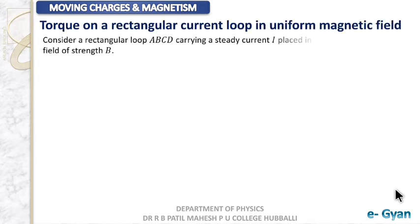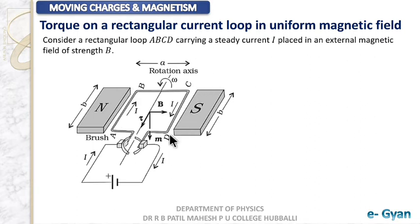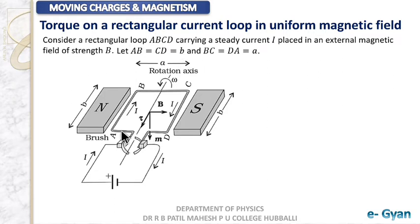Let us consider a rectangular loop ABCD carrying steady current I placed in an external magnetic field B. We have magnetic field B due to north pole and south pole — the magnetic field goes from north pole to south pole — and we have rectangular loop ABCD. AB and CD have length b, while BC and DA have length a.